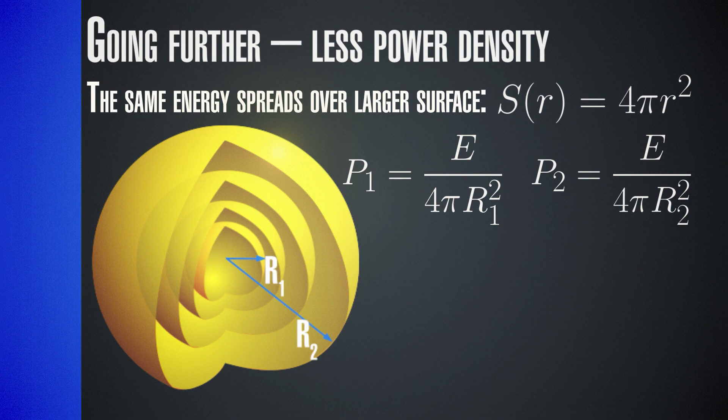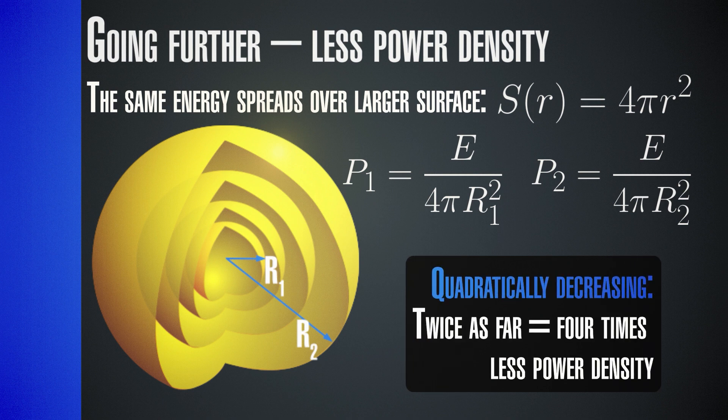Since the surface area of a sphere is 4πr², the power flux at distance r₁ from the center is the emitted power divided by 4πr₁². If we go to a larger sphere of radius r₂, we have a reduction in power flux because the same power is spread over a larger surface. We don't win or lose any power — the total energy is the same — but it is spread over a larger sphere, so the power flux must reduce. Since the sphere surface is proportional to r², the reduction in power going further from the source is always proportional to 1/r².